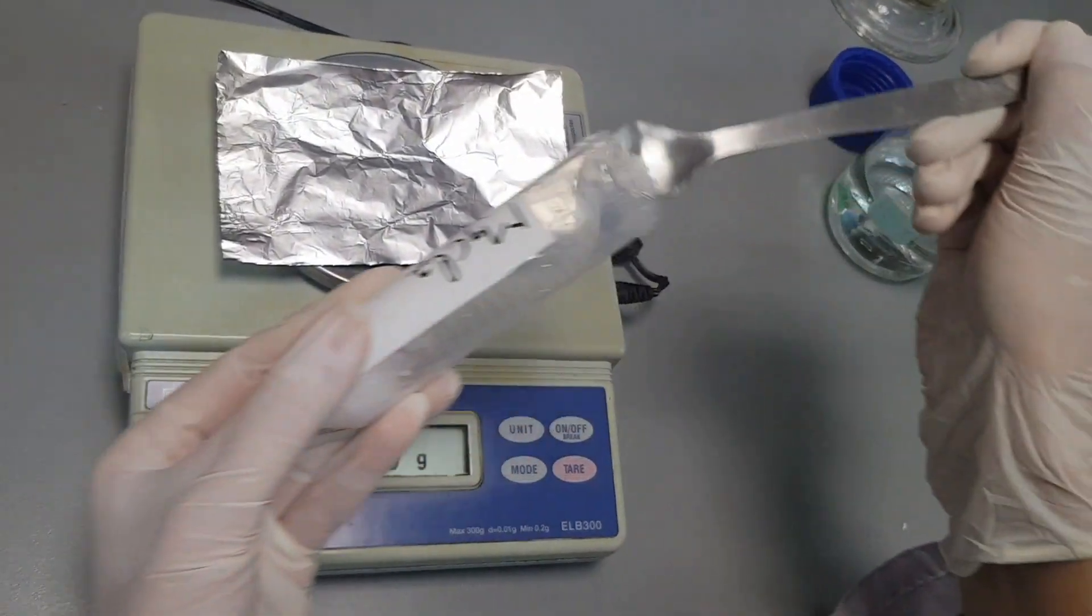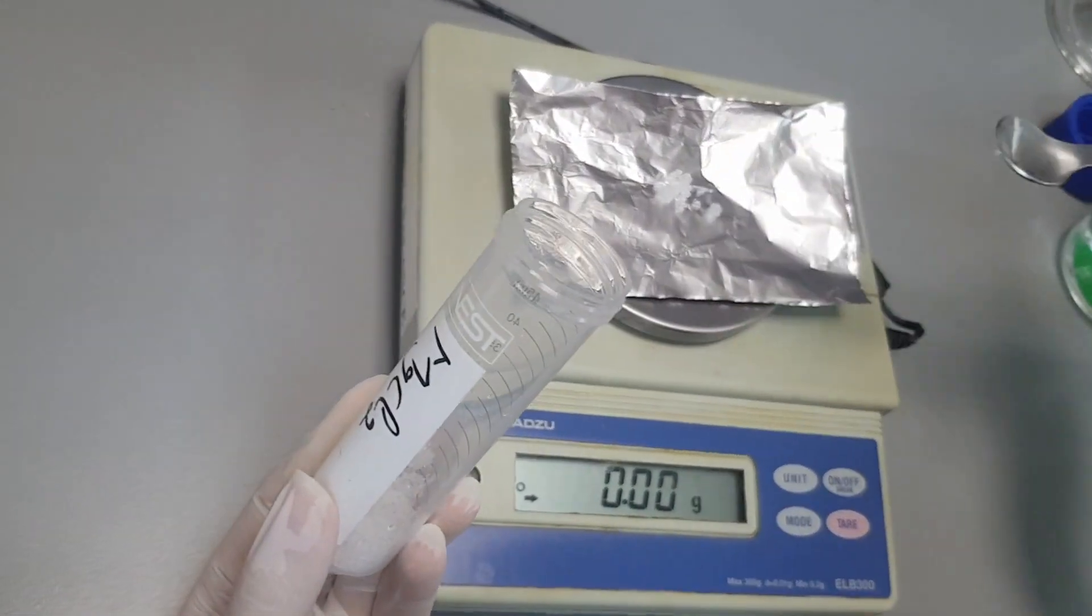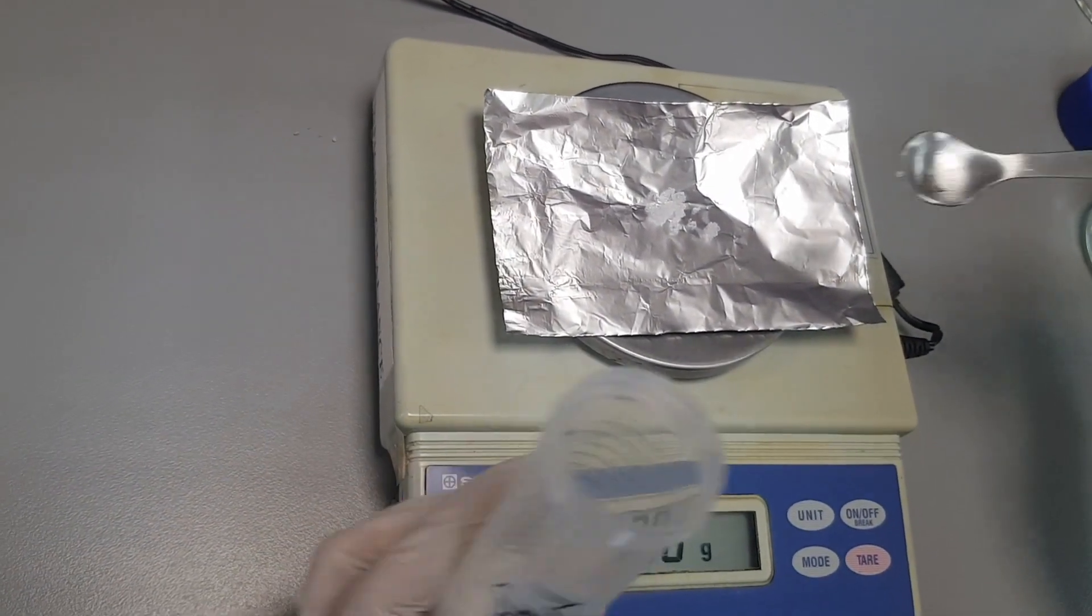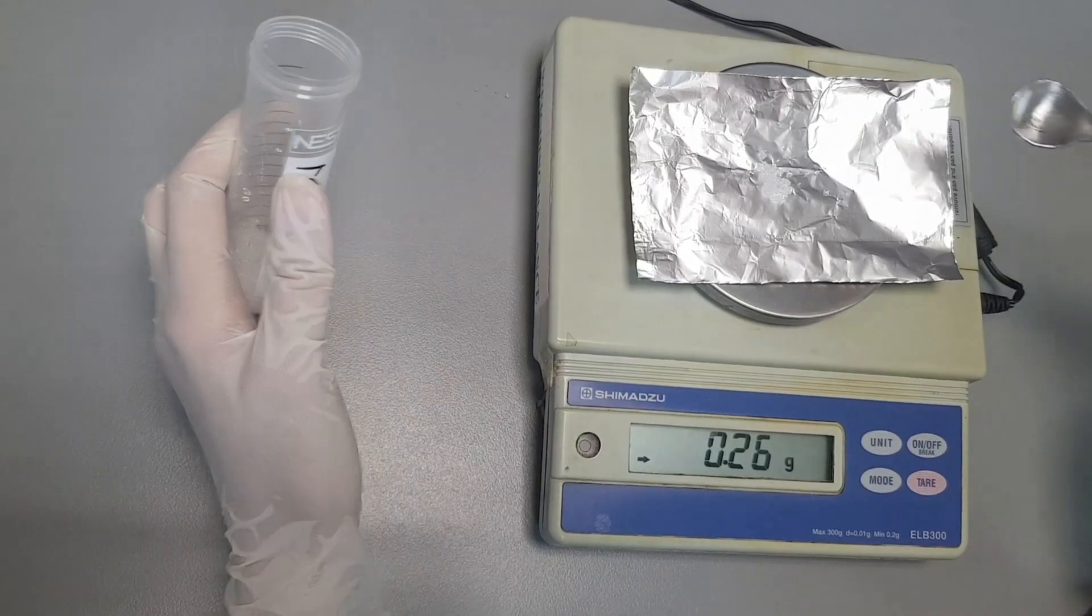Now using a weighing balance, weigh out 0.25 grams of magnesium chloride and add it to the reagent bottle.